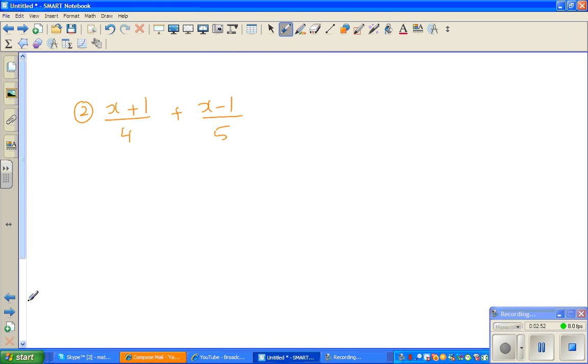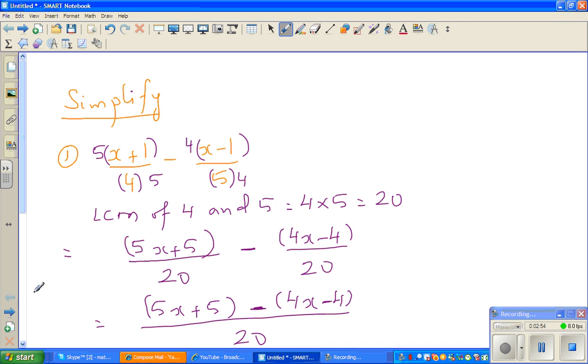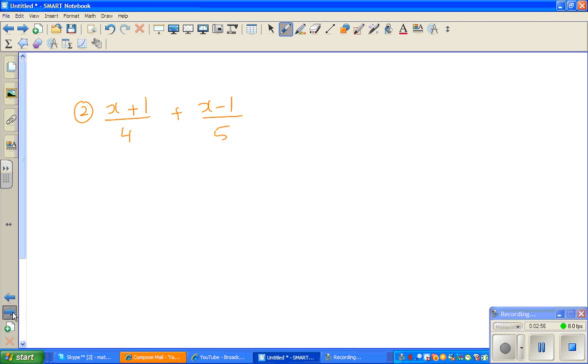Okay, so let me look at this question now. x plus 1 over 7 plus x minus 1 over 2. So here the LCM is 7 times 2 which is 14.